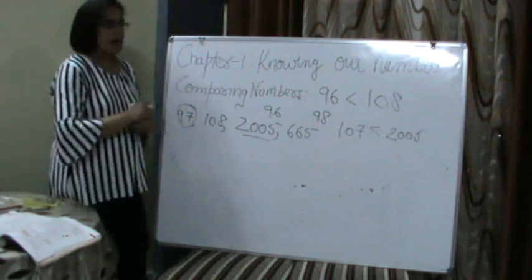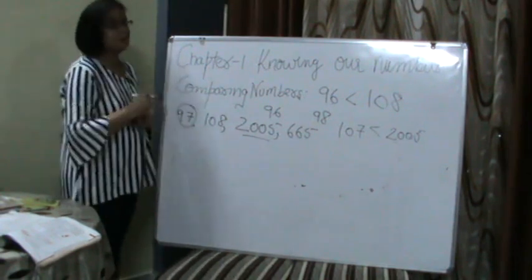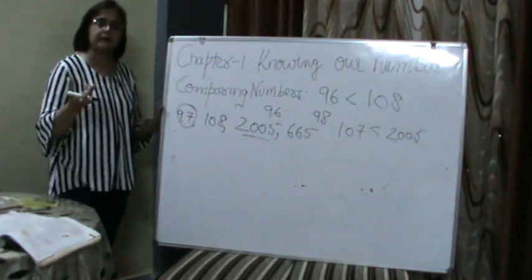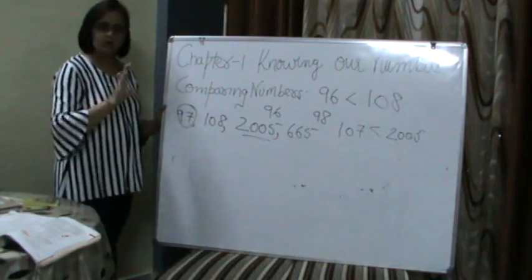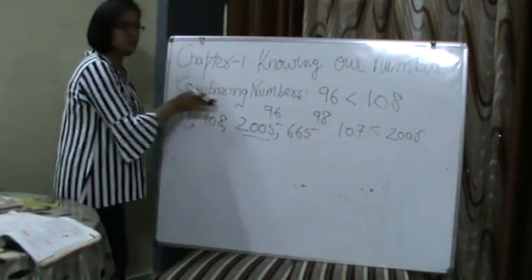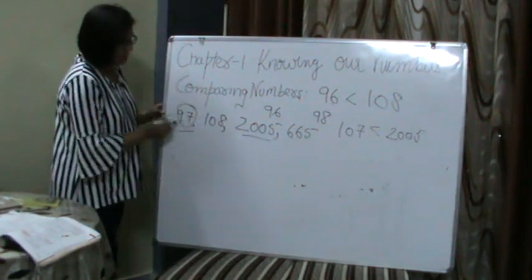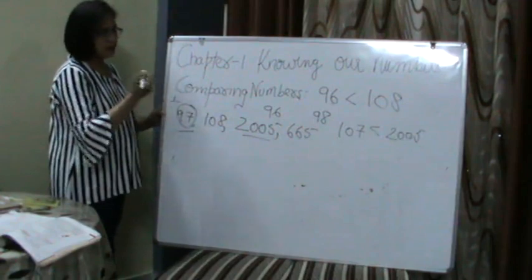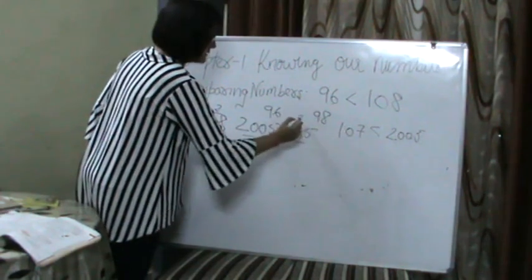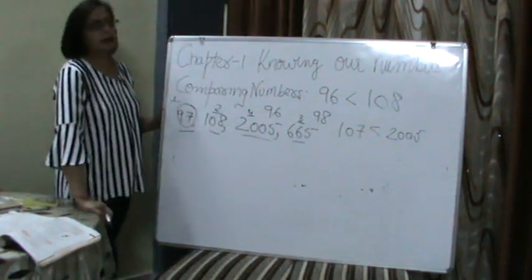In comparing numbers, we also study ascending order and descending order. Ascending order means small to big. The other name for ascending order is increasing order. Suppose I want to arrange those four numbers in ascending order. Sabse pehle sabse chota number — 97. Uske baad 108, uske baad six sixty-five, uske baad 2005. Yeh hua humara ascending order.